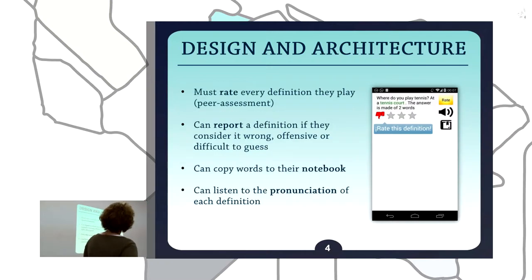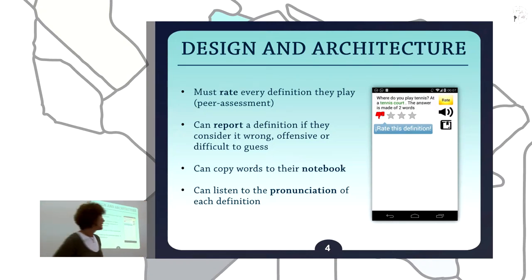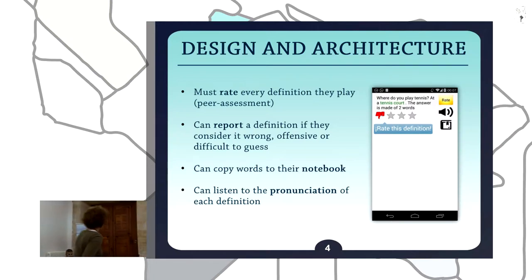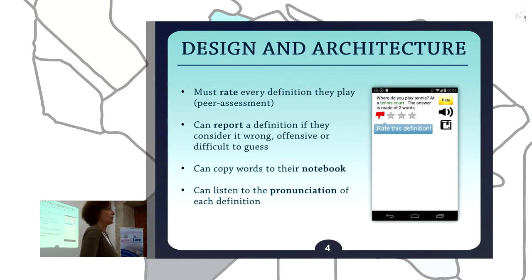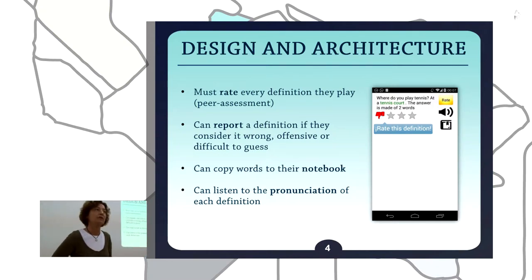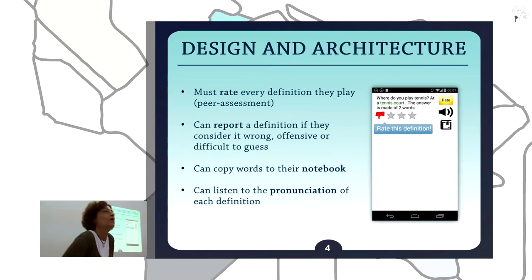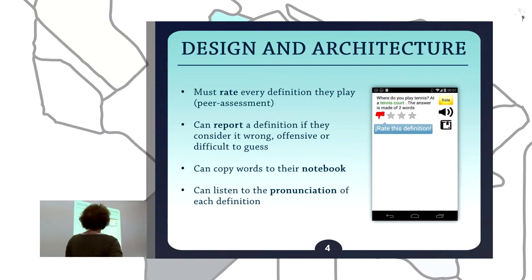Once they have done so, the system automatically delivers the first definition and students have to enter the missing word, highlighted in green. But it is not only about guessing words — once they have guessed and entered the word, they have to rate it by saying how much they like the definition, or even report it. They can indicate different reasons: the definition is too difficult to guess, linguistically incorrect, offensive, and so on. They need to evaluate or report the definition in order to go to the next one, so they get actively involved in game development and the learning process.